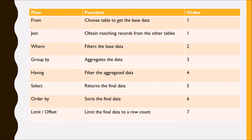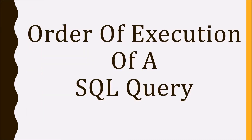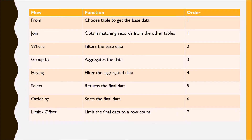So you can see the flow. The first one is FROM, and if JOIN is present in the query, then FROM and JOIN will be the first to get executed. The reason FROM is executed first is that it gives you the base data on which you will be putting your conditions, WHERE clause, LIMIT, and all other things.